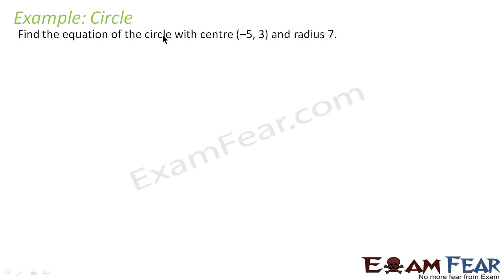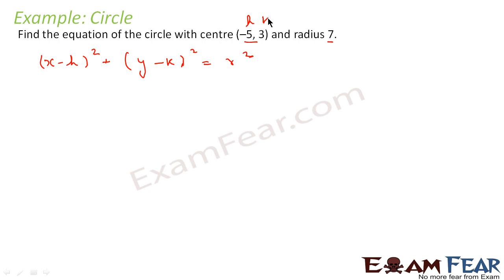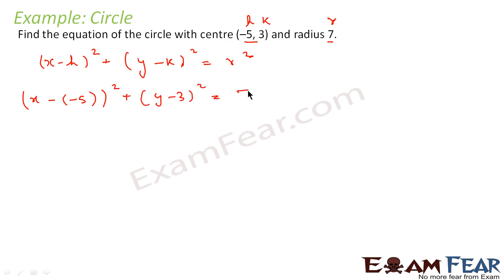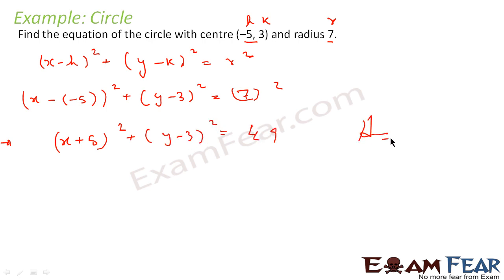Let's take one more example: find the equation of circle with center (−5, 3) and radius 7. Using the same formula (x − h)² + (y − k)² = r², we get (x − (−5))² + (y − 3)² = 7², which gives (x + 5)² + (y − 3)² = 49. This is our answer. You can simplify further, but this form is also acceptable.